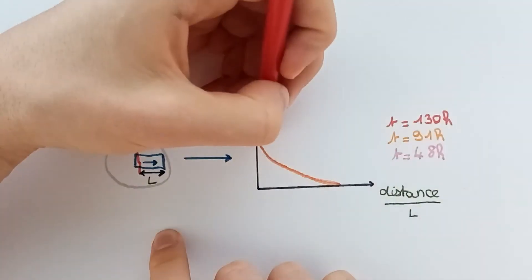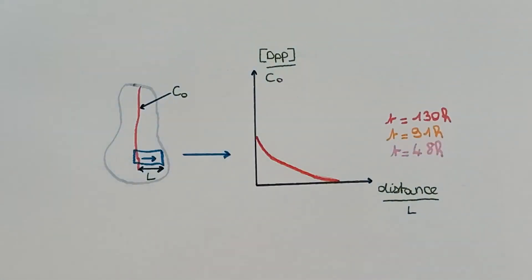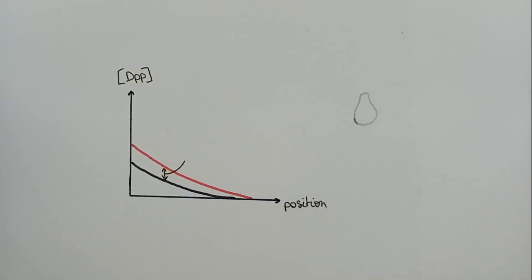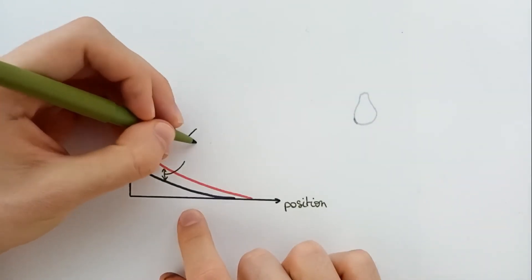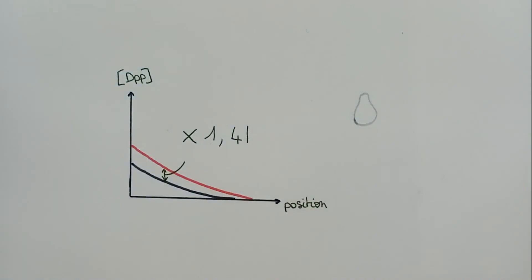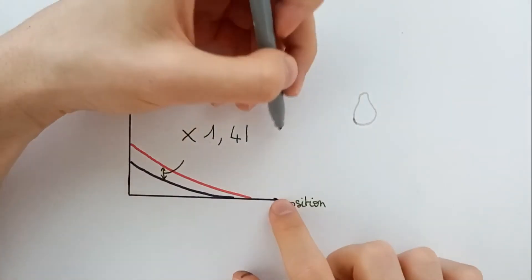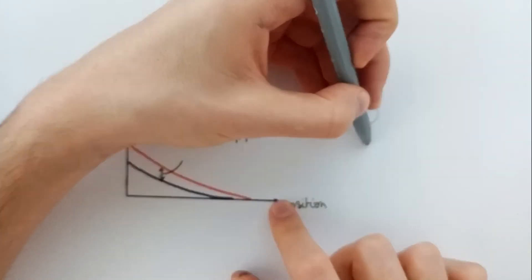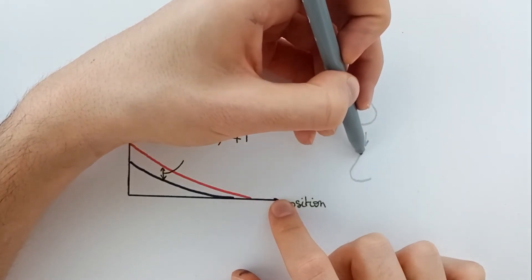That means that DPP gradient is scaling with tissue size. A link can be made through mathematical analysis between tissue growth and DPP concentration. And this link is that cell division is correlated with an increase of DPP concentration of 41%.